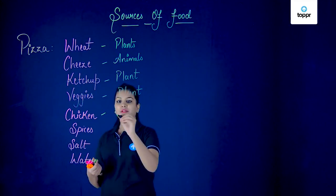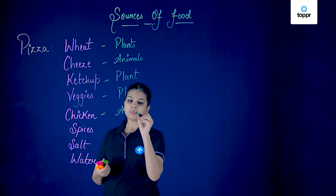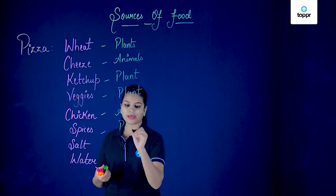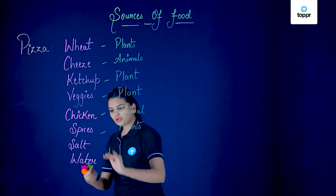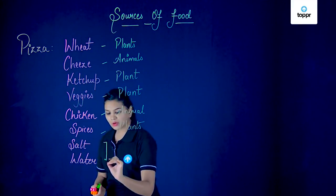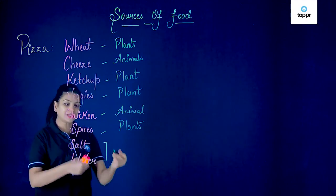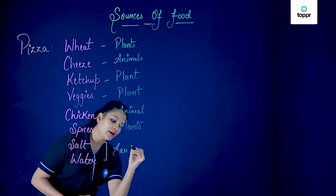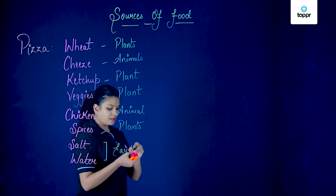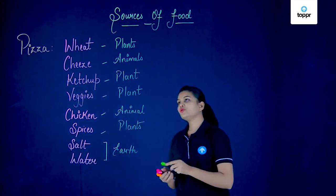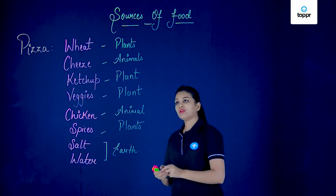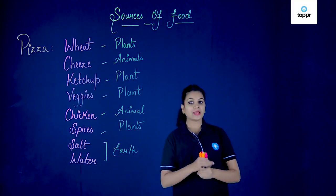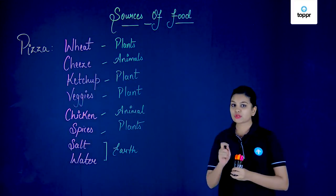Veggies, of course, we get from plants. Next is chicken — chicken we get from animals. Spices again we get from plants. Coming to salt and water, these two are not obtained primarily from any plant or animal; they are mainly products of our earth. But except for these two, you must have noticed that mainly we obtain our food items from plants or animals.